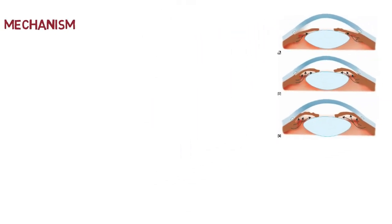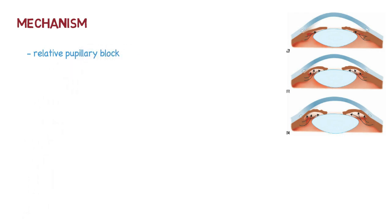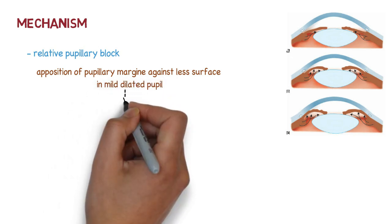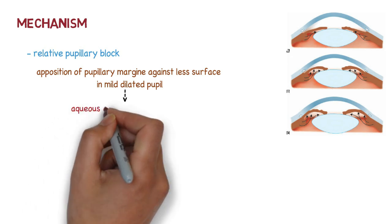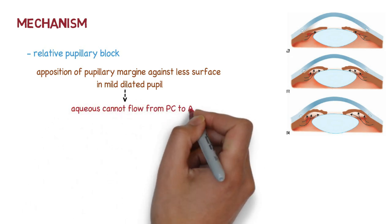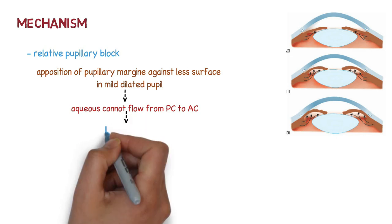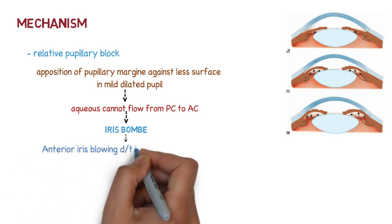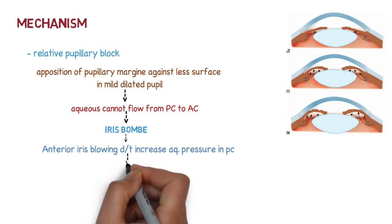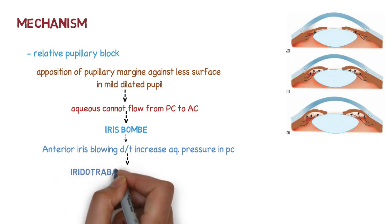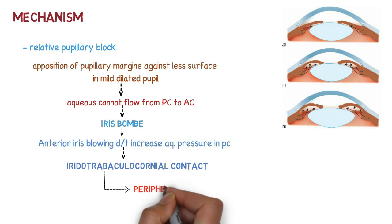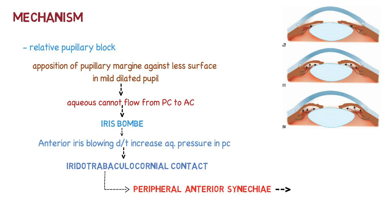The mechanism involves relative pupillary block — opposition of the pupillary margin against the lens surface in a mildly dilated pupil. Aqueous outflow is obstructed so aqueous cannot flow from the posterior chamber to the anterior chamber, causing rising pressure. This condition is called iris bombé. Due to increased aqueous pressure in the posterior chamber, the anterior iris bows forward, creating adhesions — iridotrabeculocorneal contact — causing peripheral anterior synechiae where the iris adheres to the angle. This is why the condition is called primary angle closure glaucoma.